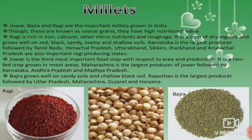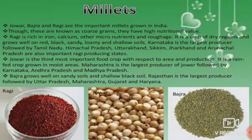Jowar is the third most important food crop with respect to area and production. It is a rain-fed crop grown in moist areas. Maharashtra is the largest producer of Jowar, followed by Karnataka, Andhra Pradesh and Madhya Pradesh. Bajra grows well on sandy soil and shallow black soil. Rajasthan is the largest producer, followed by Uttar Pradesh, Maharashtra, Gujarat and Haryana.